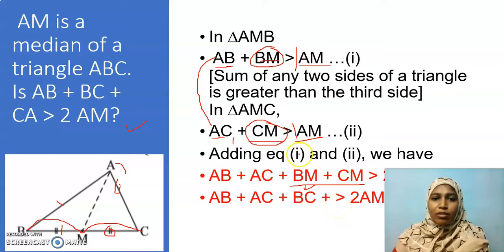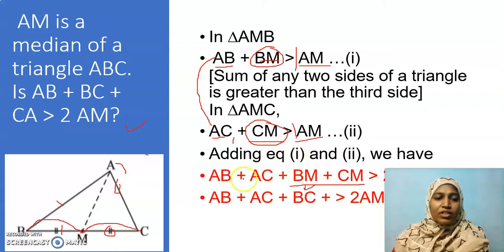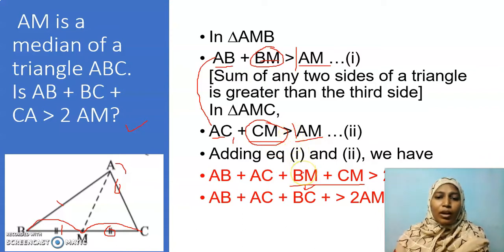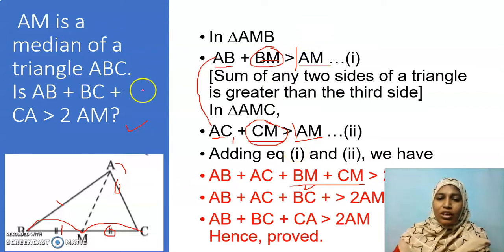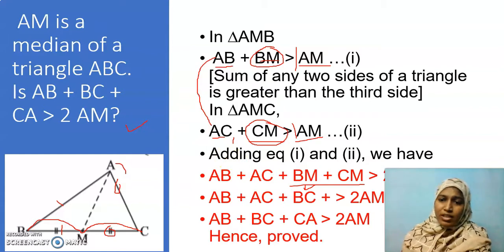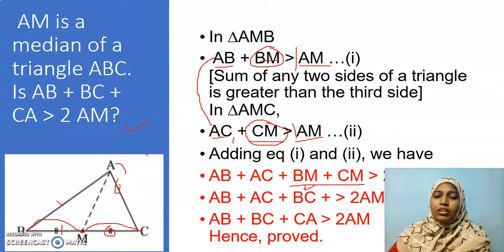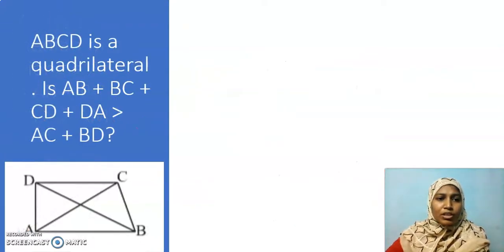Is it clear why we started this way? If you have a median, we get 2 triangles. In the first triangle I got one condition, in the second triangle I got another condition, and I added those two conditions to get the required result. In proof problems, it is required to write 'Hence proved' or 'Hence it is proved' — you should not leave it without concluding. Now shall we move to the next question.